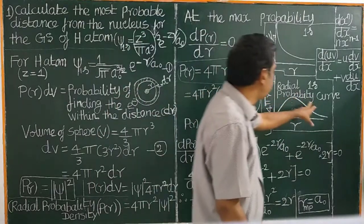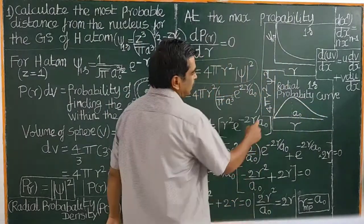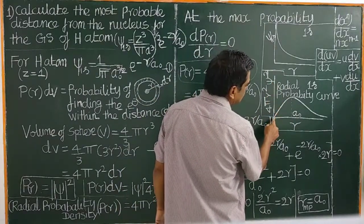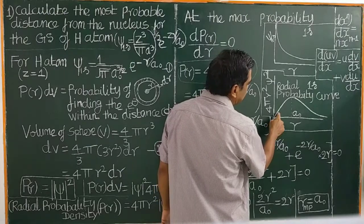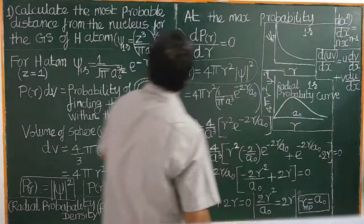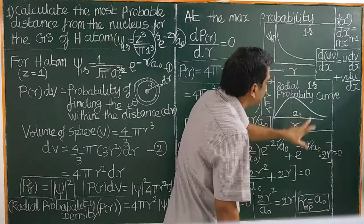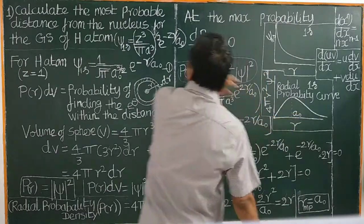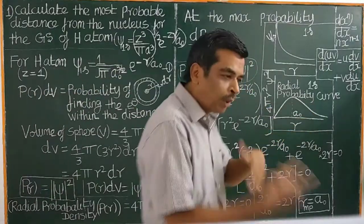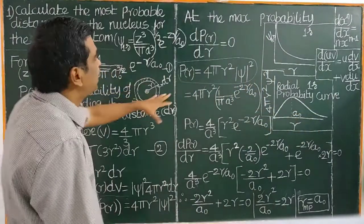A plot of radial probability density versus distance is called the radial probability curve for the 1s orbital. From the curve, the probability of finding the electron near the nucleus is 0. It increases and reaches a maximum at a particular distance — this is called the most probable distance, where R = a₀. This most probable distance can be obtained by plotting the curve or mathematically.